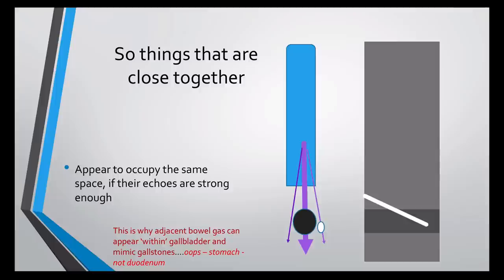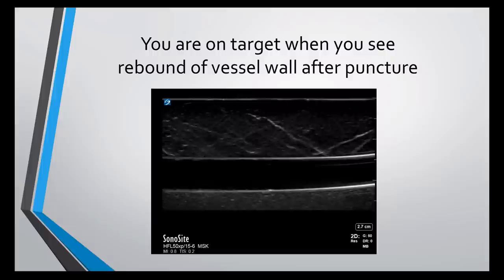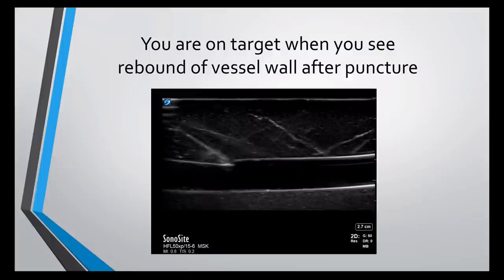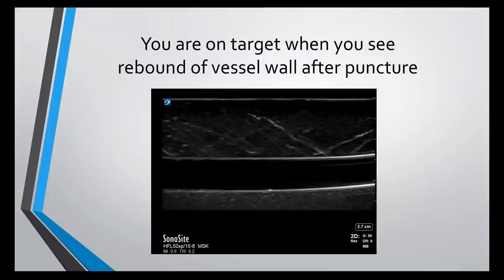We also see side lobe artefact when gas appears to be within the gallbladder or gas from the duodenum gives a white haze across the middle of a cardiac scan. Ways to avoid this are pretty much the same as before: brace, brace, brace, wrap the probe lead, align everything up. Particularly when you're a beginner it's really helpful to have somebody else watching the hub of your needle — they can tell you when you get that flashback without you having to take your eyes off the screen. The proprioception will return but not for a few months. Don't forget to watch for that little rebound of the vessel wall as you puncture it — particularly with a fairly low-volume vessel, where it's easy to indent the leading edge quite significantly before you actually puncture it. So wait for that bounce back.